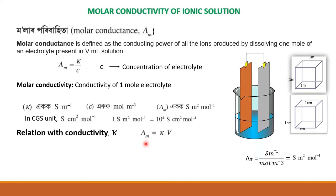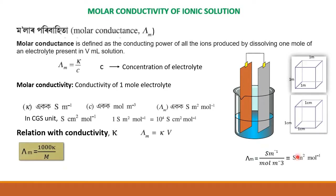Molar conductivity — for a fixed amount of 1 mole: lambda M equal to kappa into V. The electrolyte dissolved in volume V gives lambda M equal to 1000 kappa divided by M, where M is molarity in mol per liter.